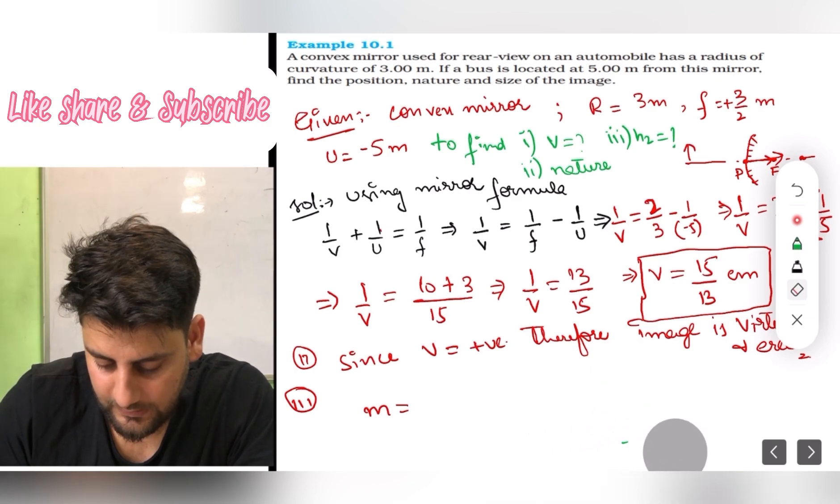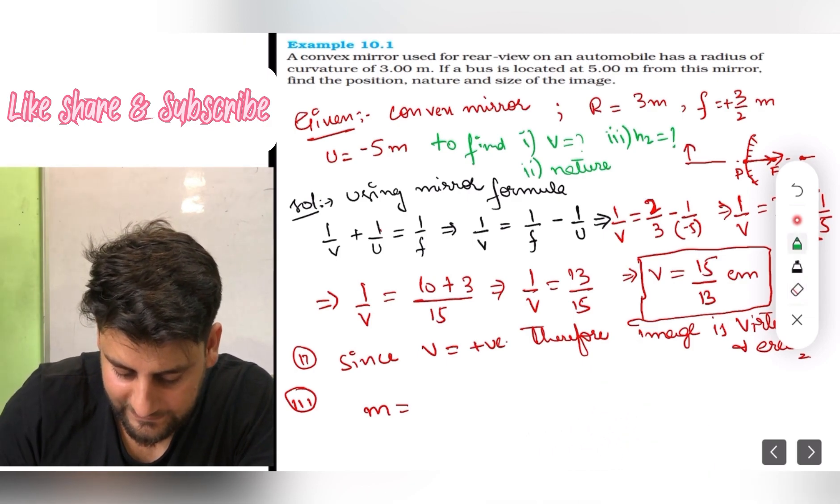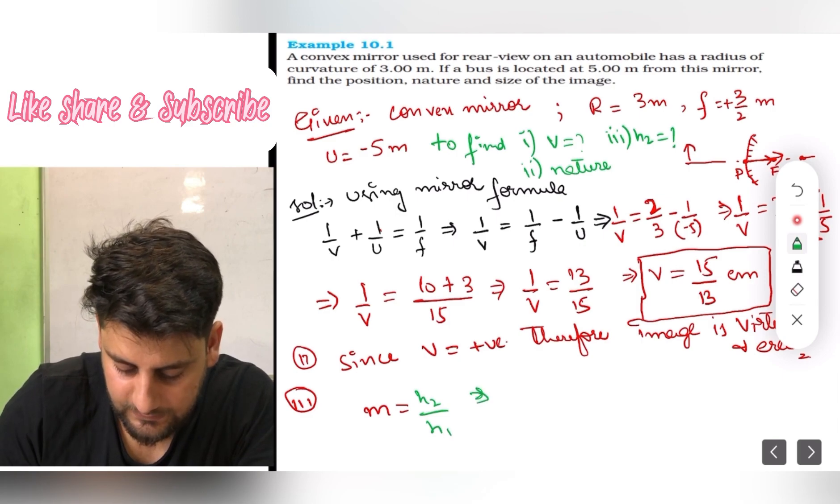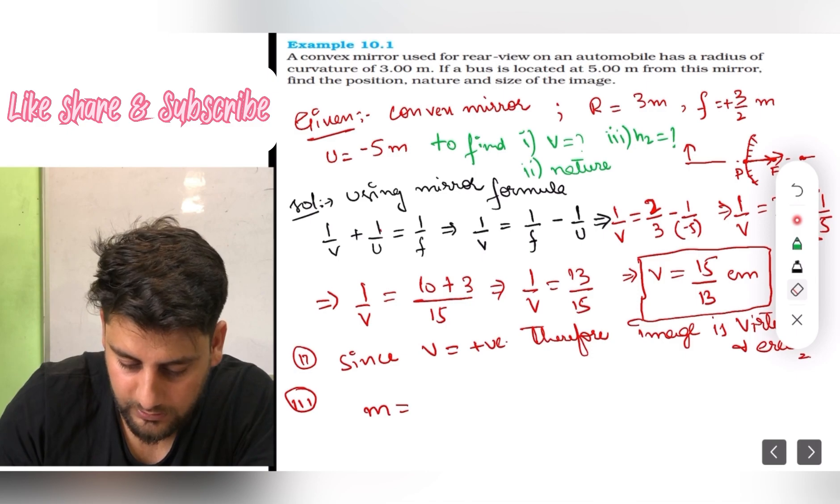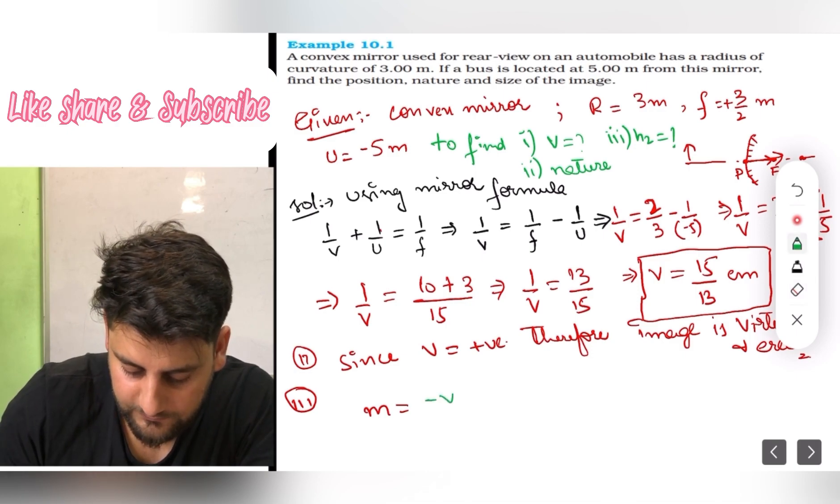This is one step further. At least the person checking your answer sheet can say, okay, everyone calculated magnification up to this point, but this one has done something extra. They assumed h1 and found h2. That's very good. So because the question is asking for h2, we can give an assumed value.